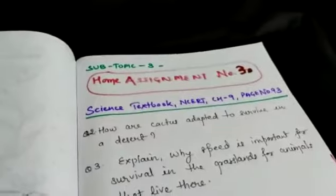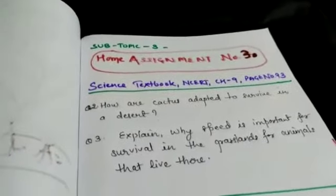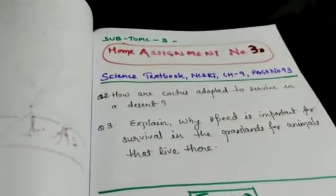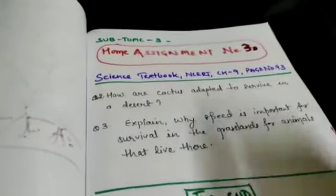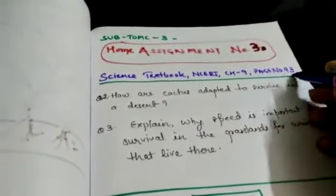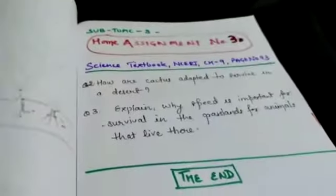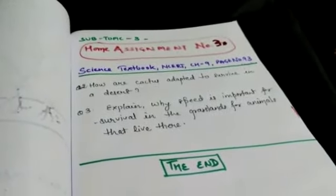Next we have subtopic number three, assignment, home assignment number three. This you have to do in your science copies and submit on Google Classroom. This is taken from your page number 93, question number two and three. This is for today's video session. Thank you.